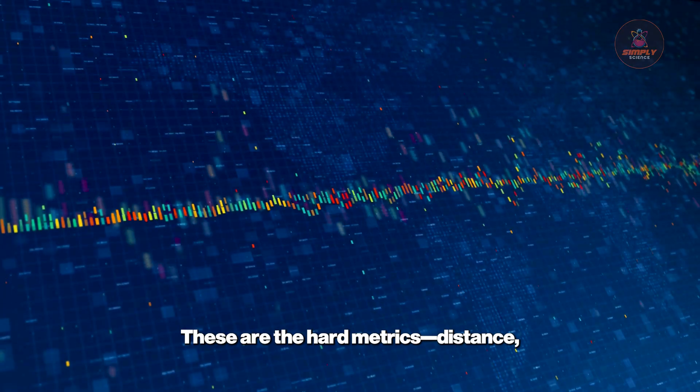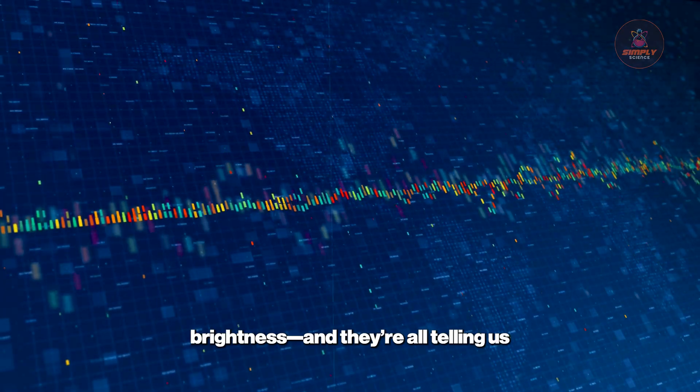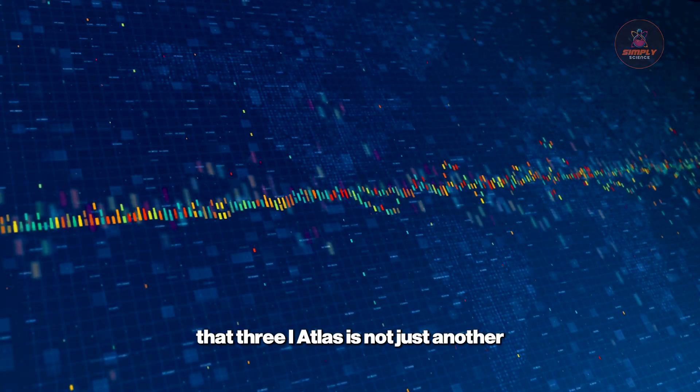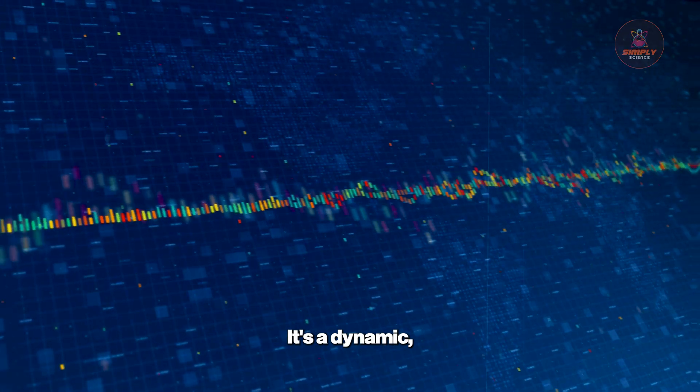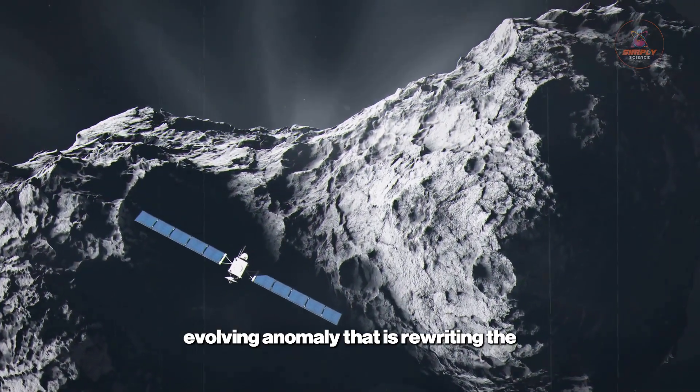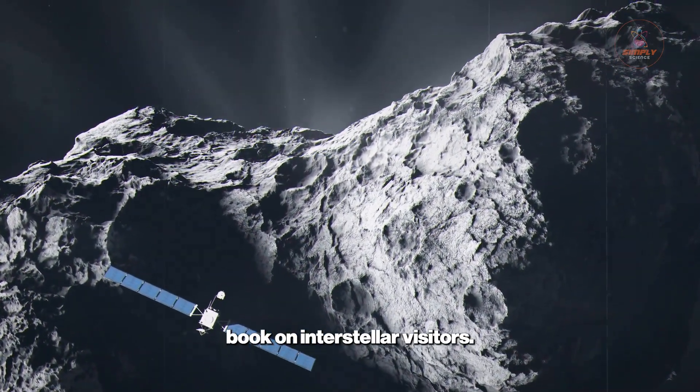These are the hard metrics: distance, speed, brightness. And they're all telling us that 3i Atlas is not just another rock passing through. It's a dynamic, evolving anomaly that is rewriting the book on interstellar visitors.